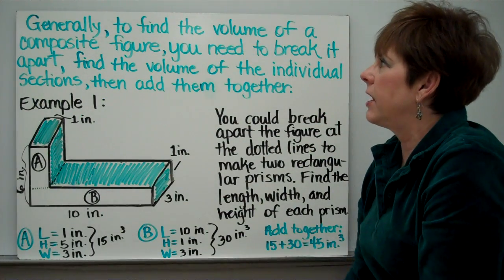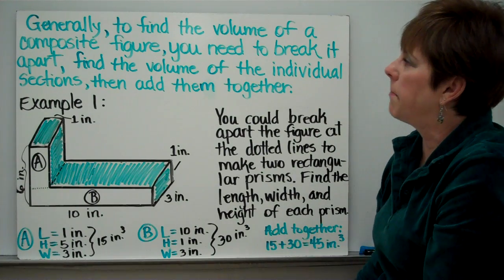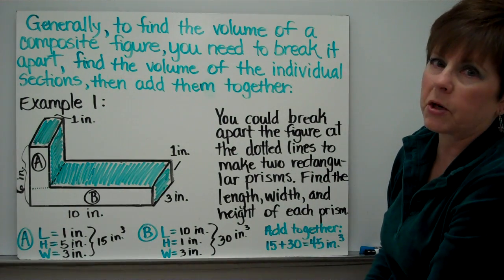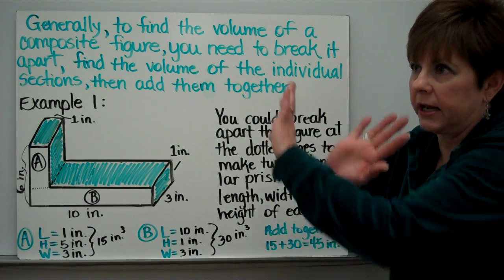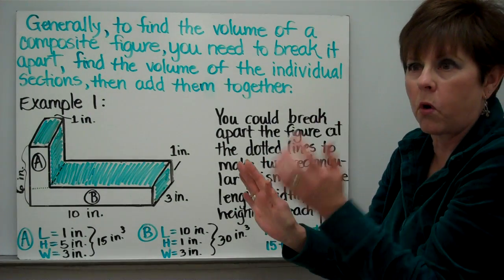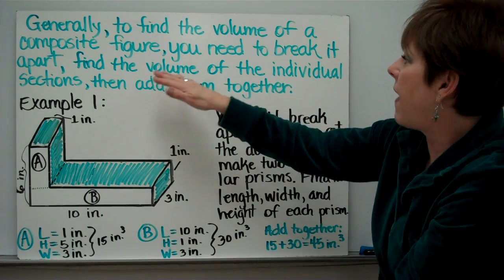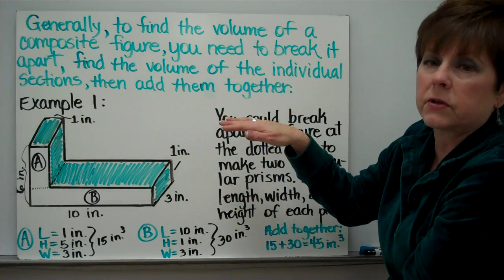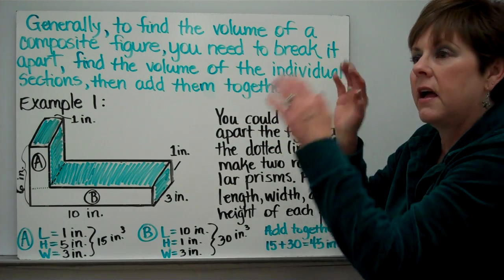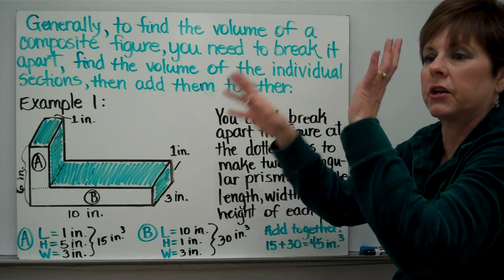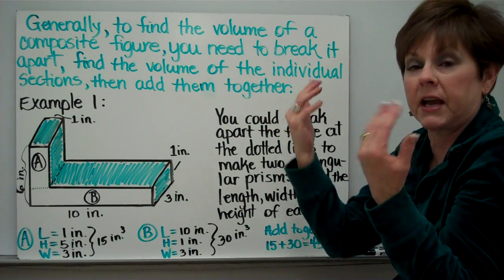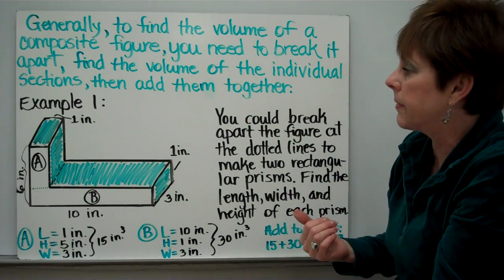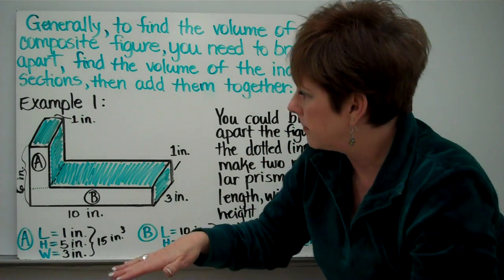Generally, to find the volume of a composite figure, you need to break it apart. You can't look at it all at once in one figure. You find the volume of each individual section, and then you add that section up with this section — or if there's three sections, you add all three of them up. Here's an example.